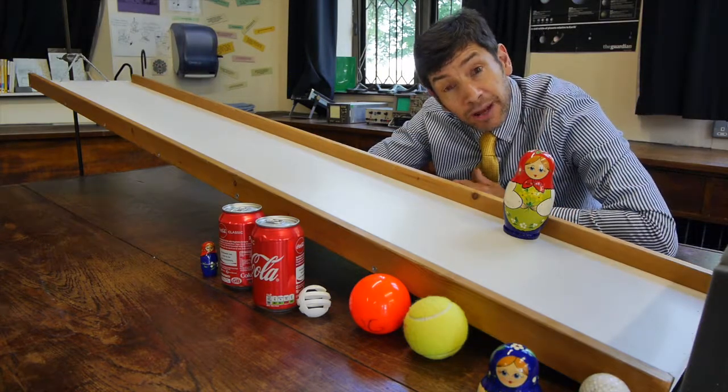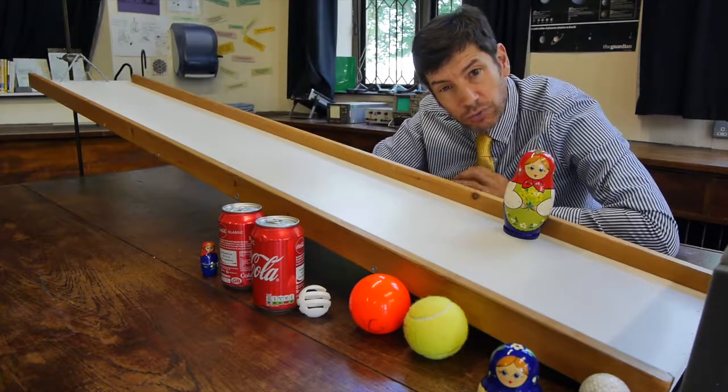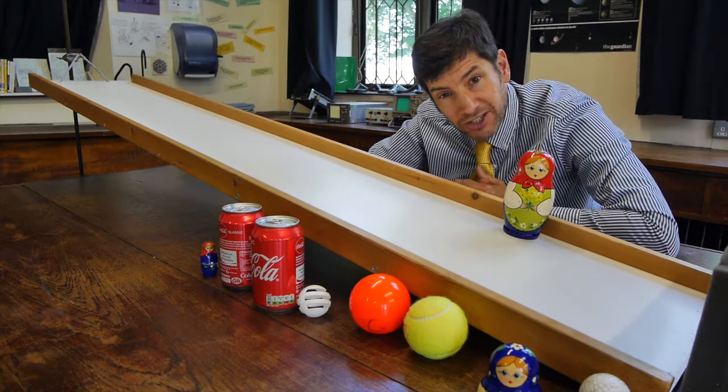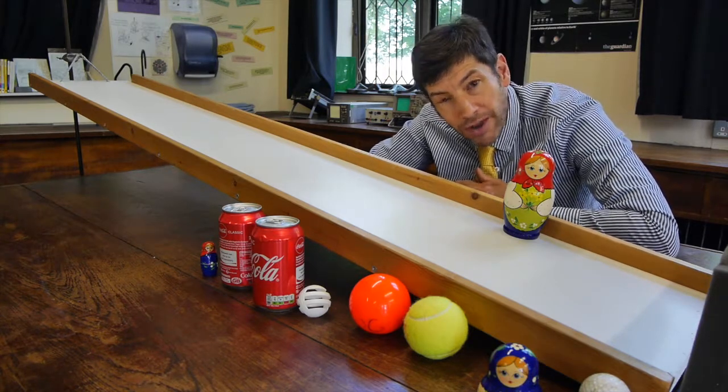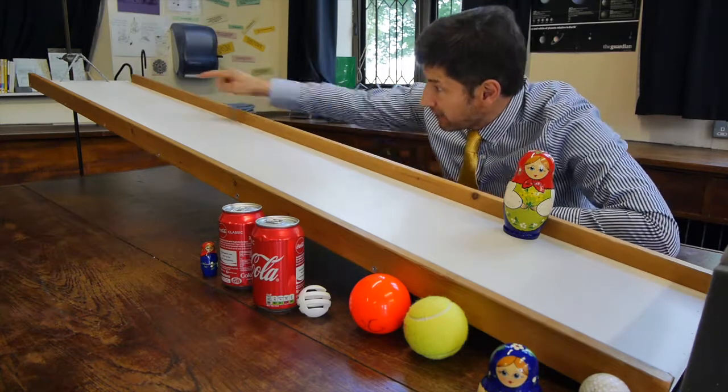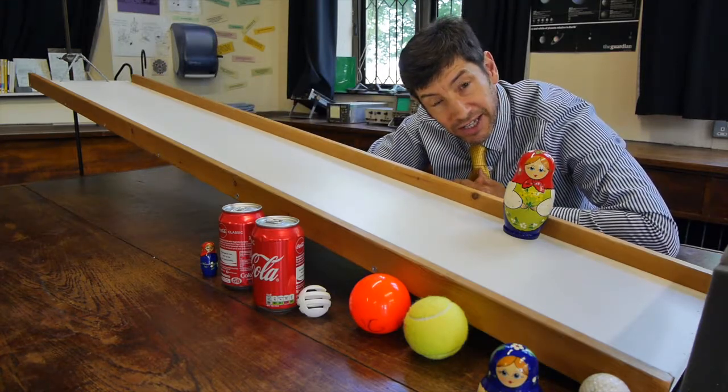The first thing that I'm sure you know is at the top of the ramp, they have gravitational potential energy. And yes, the heavy one has more gravitational potential energy than the hollow one because it's got more mass, but they're both at the same height. And then when they come down the slope, they convert that gravitational potential energy into kinetic energy.